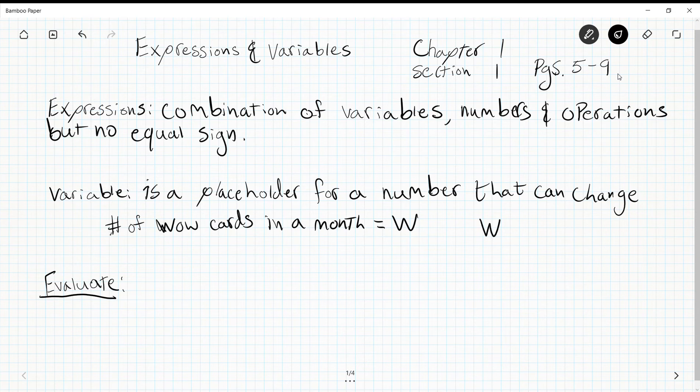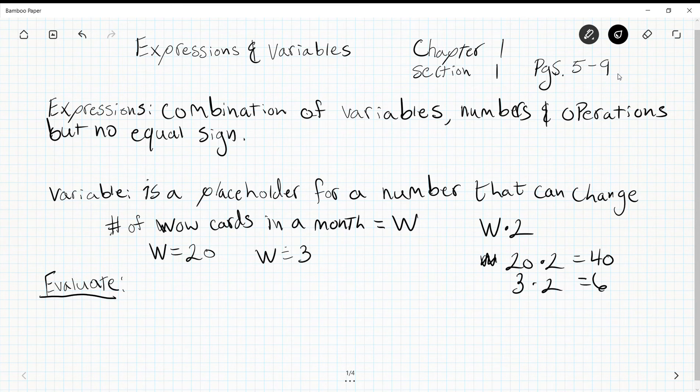So if W equals 20 and there are 20 days that have passed, you will have earned W times 2 equals—you would have earned 40 Wow cards. Or if W equals 3, 3 times 2 equals 6. Notice how the number that is changing is the variable. The whole point of a variable is that it can stand for many different values.